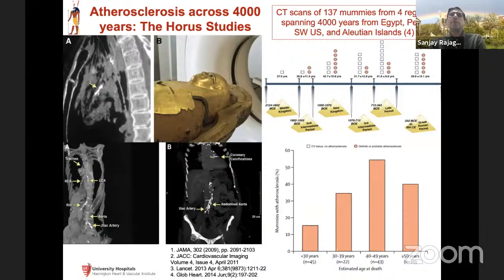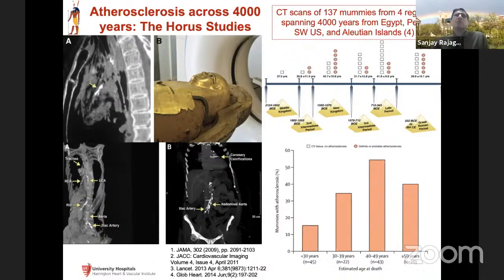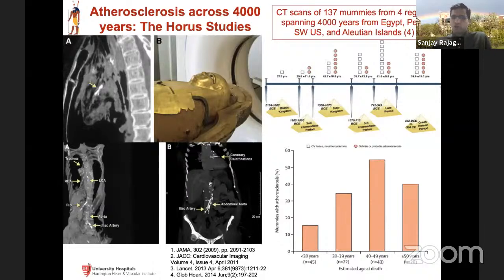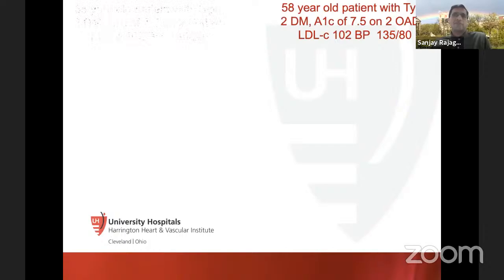As you grow older — the third, fourth, and fifth decade — you see a gradual increase in atherosclerosis. We now know the initial foundations for atherosclerosis are actually put down even in utero. There's evidence of intimal changes in the developing fetus, and certainly during the first decade of life atherosclerosis is already being laid down. By the fifth decade, almost 90% of patients have atherosclerosis — it is inevitable as we age.